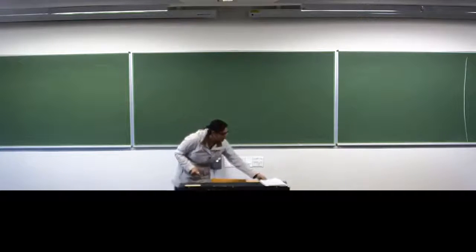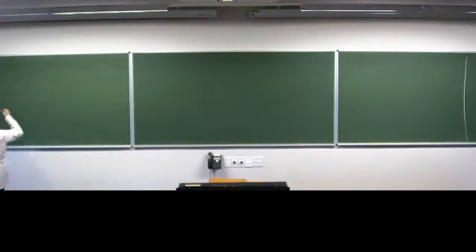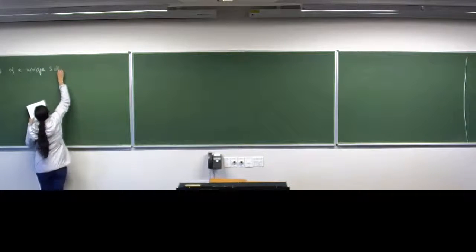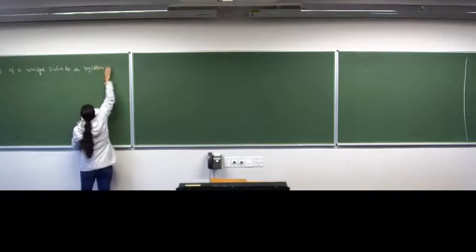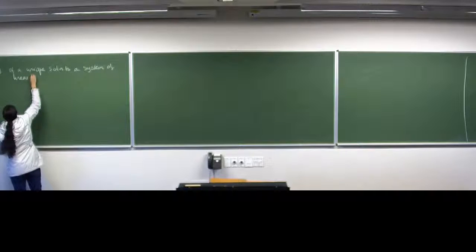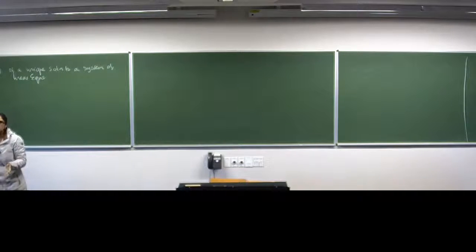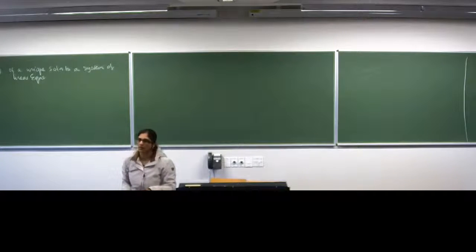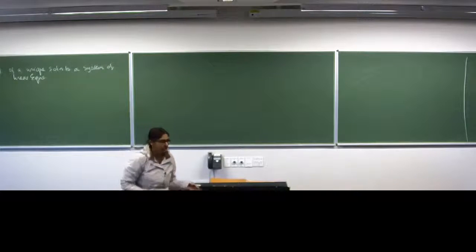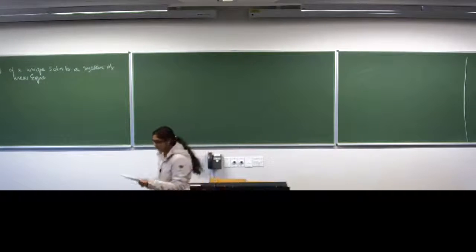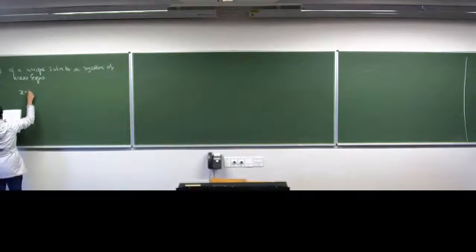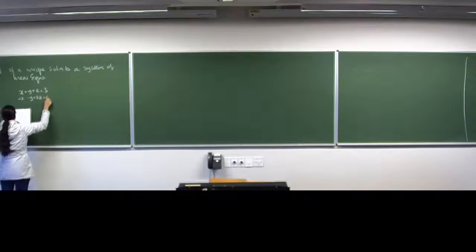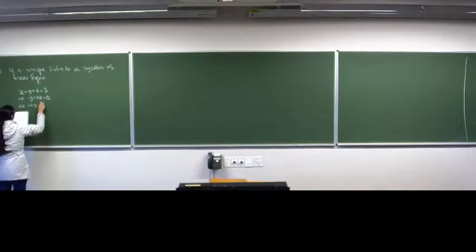So the next example we're going to do, we'll do it together, of a unique solution to a system of linear equations. I'm already telling you that my system of linear equations is going to have a unique solution. You will not know that obviously in tests, but this is just an example. So we've got this system: x plus y plus z equal to three, minus x minus y plus 2z equal to zero, and 2x plus 4y minus z equal to seven.